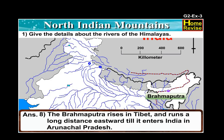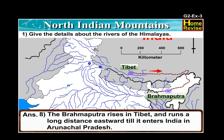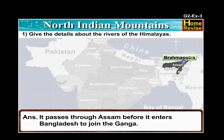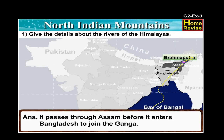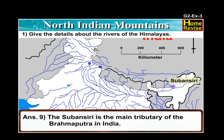The Brahmaputra rises in Tibet and runs a long distance eastward till it enters India in Arunachal Pradesh. It passes through Assam before it enters Bangladesh to join the Ganga. The Subansiri is the main tributary of Brahmaputra in India.